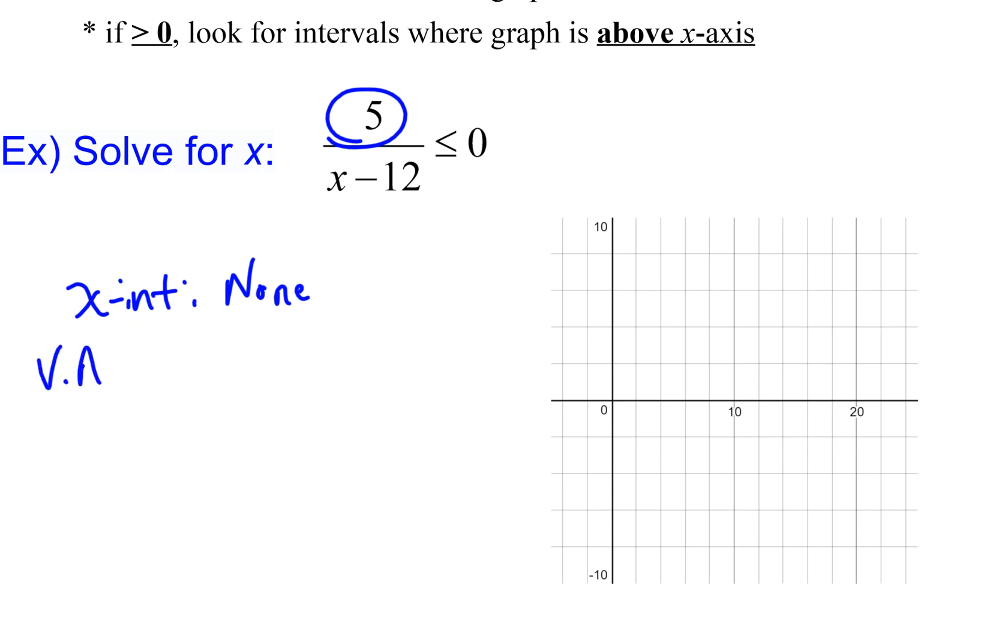So what about the vertical asymptotes? Now I'm going to take the denominator and set it equal to zero. That gives me the line x equals 12. My units on this grid are two units apart, so x equals 12 would be this vertical line right here. That's my vertical asymptote.